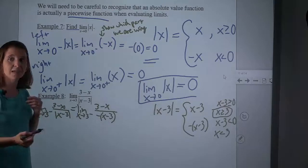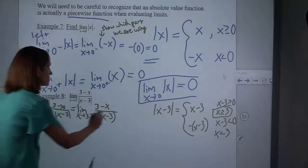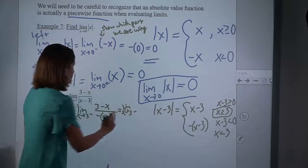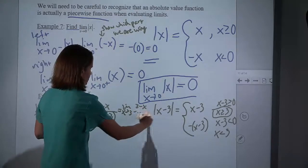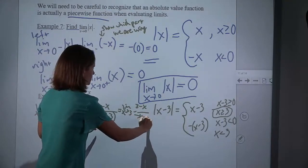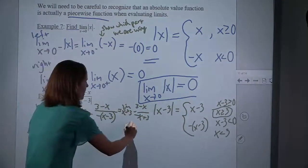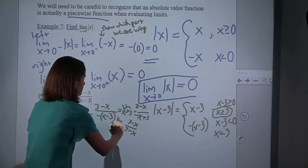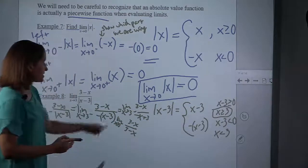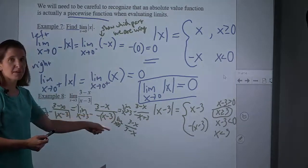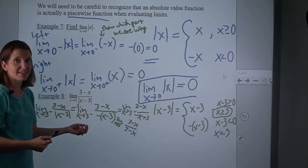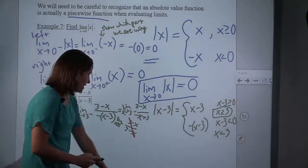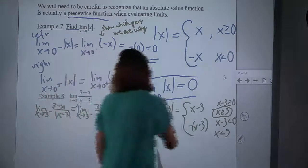I need to use algebra. So here, if I just distribute that negative, I'll have negative x plus 3. If I rearrange that, that is 3 minus x. And 3 minus x over 3 minus x — if I try to plug in, I will again get 0 over 0, which is not good. But if instead I cancel, I see that it leaves a 1 there.